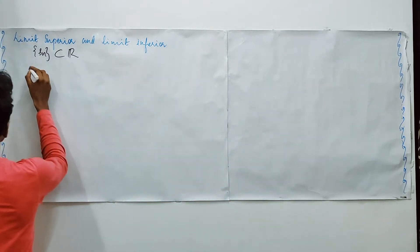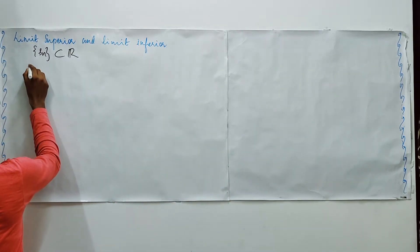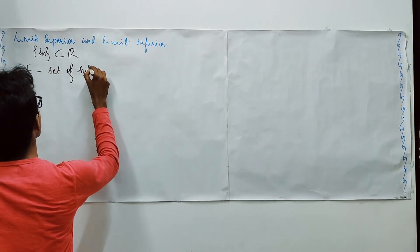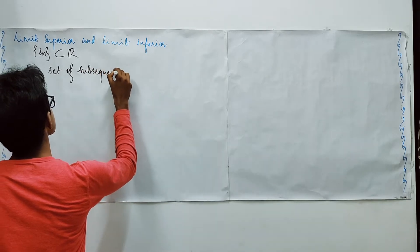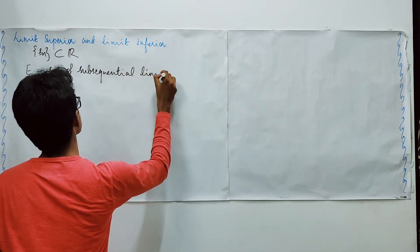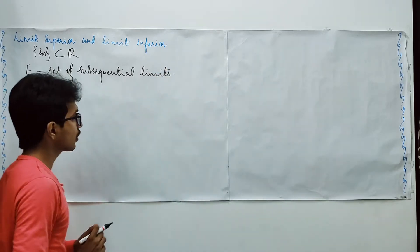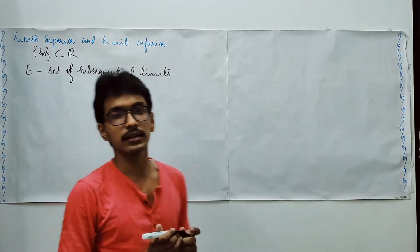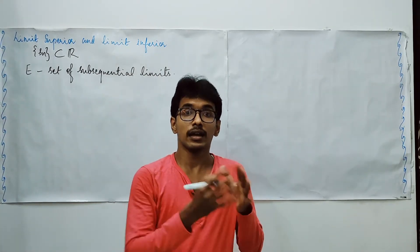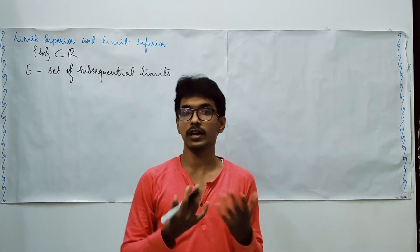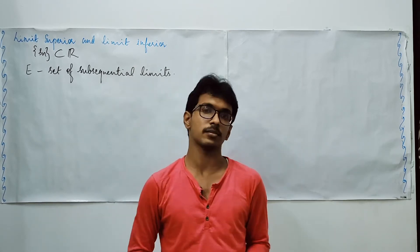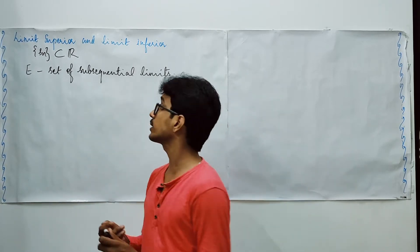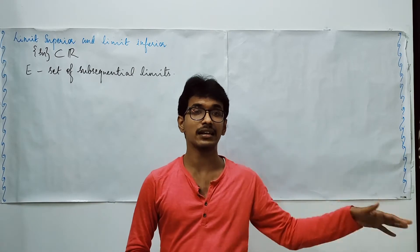Let E be the set of sub-sequential limits. It may be a singleton set, or it may be an empty set, or it may be a set consisting of a finite number of elements. In order to study these concepts, we are going to collect the sub-sequential limits in the extended real line.